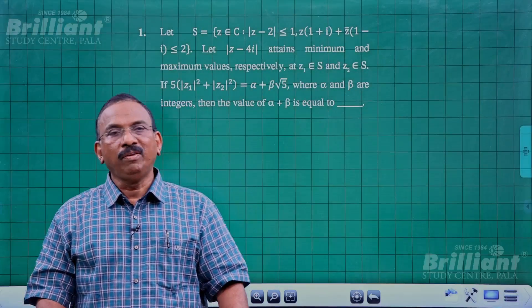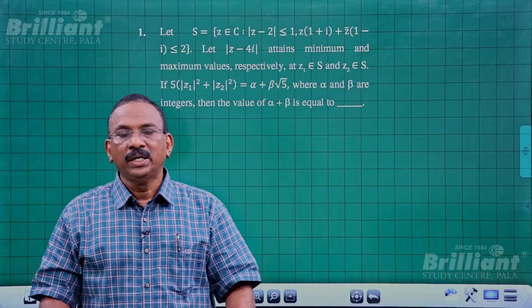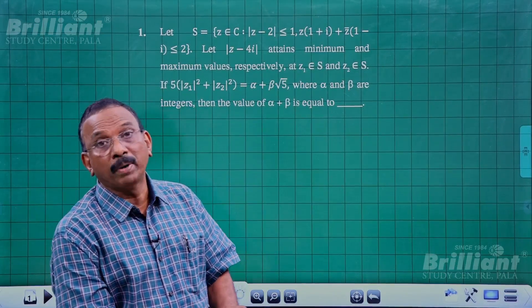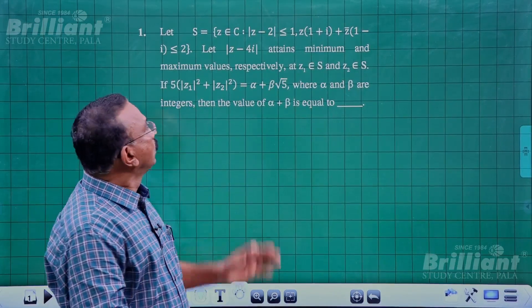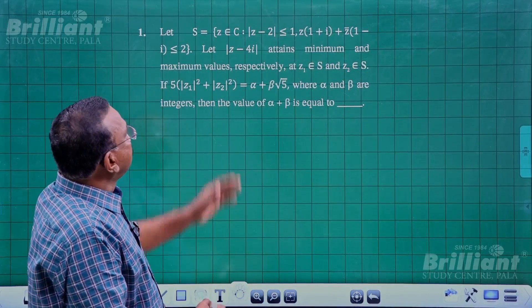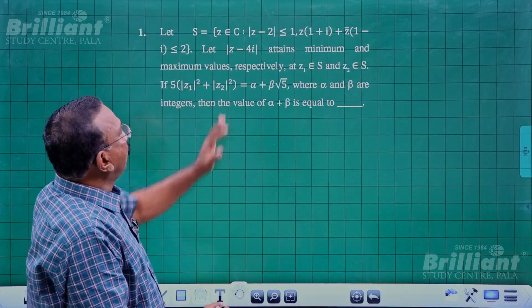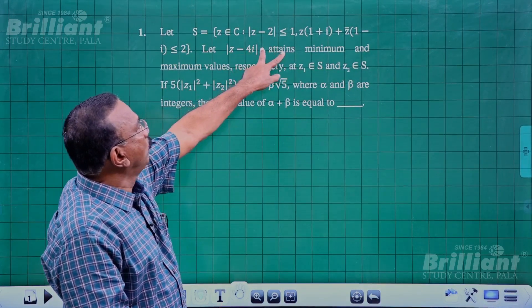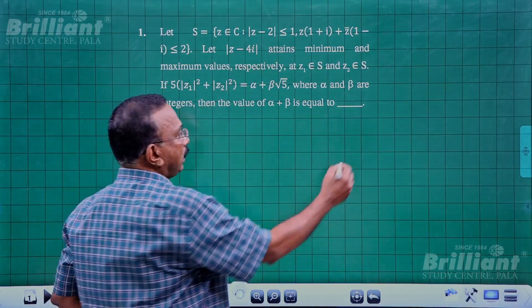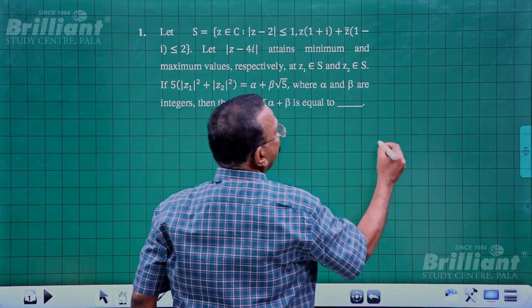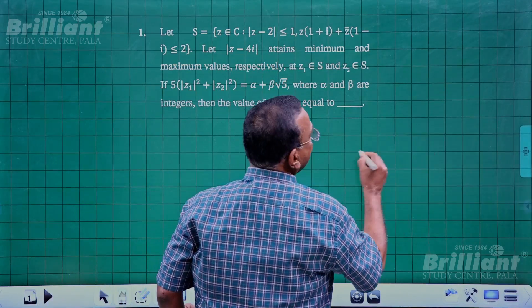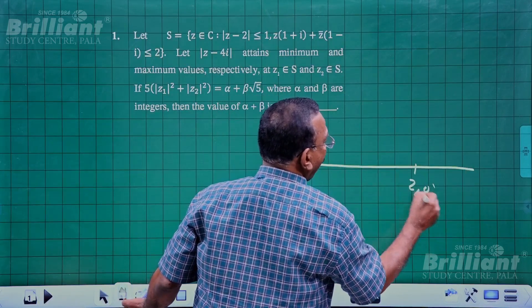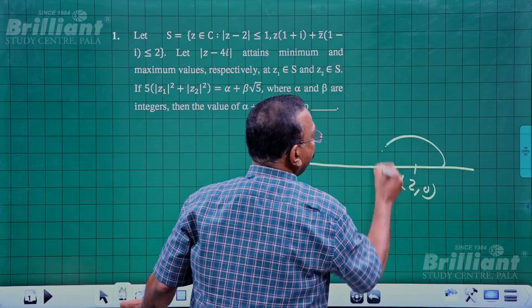Welcome dear students. Today we discuss our JEE Main questions on the first section, complex numbers. The first question defines S as the set where |z - 2| < 1, which is a circle with center at (2, 0) and radius 1 unit.